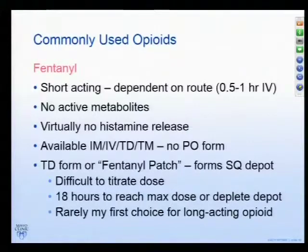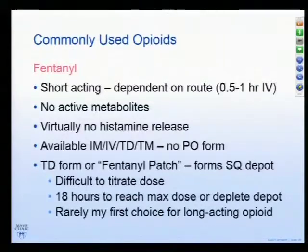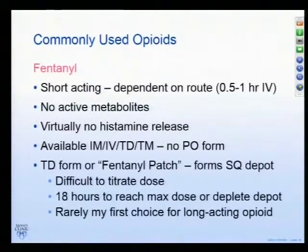Fentanyl is very powerful and very short-acting. It's available in IM, IV, transdermal, and transmucosal routes — no oral route. The transmucosal route is almost exclusively reserved for cancer patients and requires a special license to prescribe. It has no active metabolites and doesn't cause histamine release, so in people who have reacted poorly to other opioids, this is a good one to try. Regarding the transdermal system: patients on this for chronic pain management find it very difficult to treat acute or rapidly changing pain, because it takes 12 to 24 hours to see the effect of whatever changes you make.